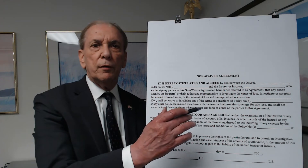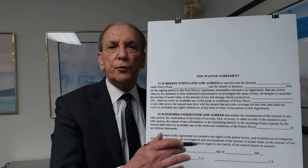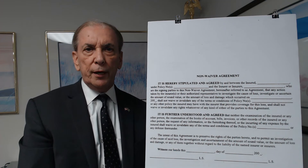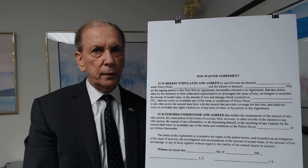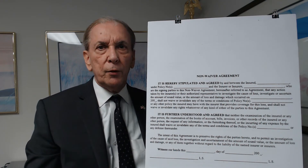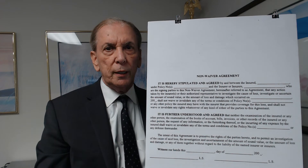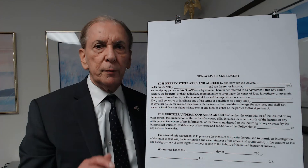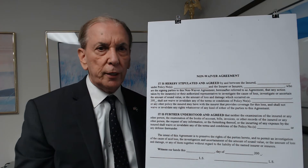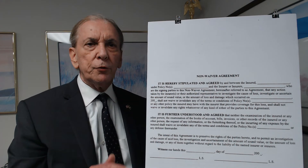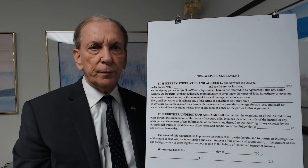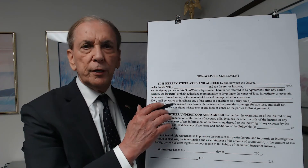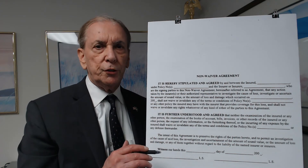I have an example of a non-waiver agreement on the easel next to me. The non-waiver agreement that you may be asked to sign may be different, but I suggest that the language will be substantially similar to this example. A non-waiver agreement can be broken down into various sections. The first part typically identifies the name of the insurance company and the name of the insured.